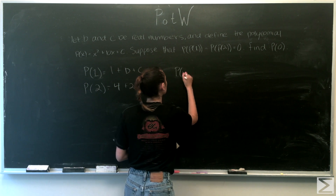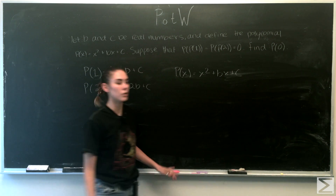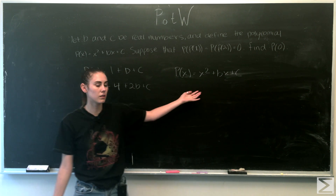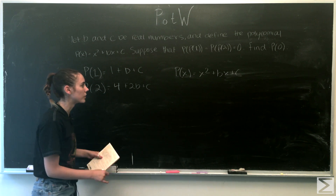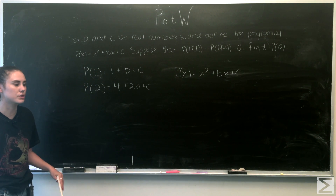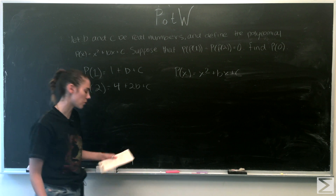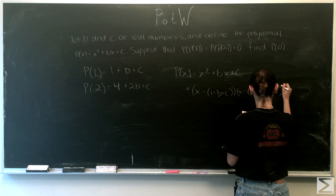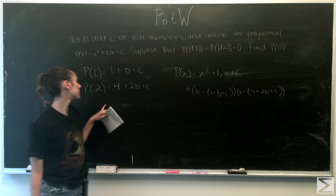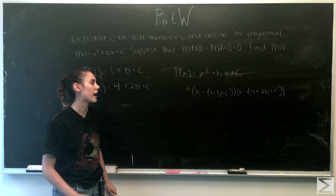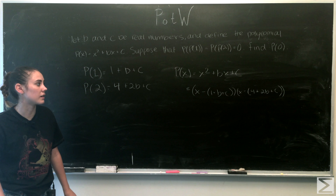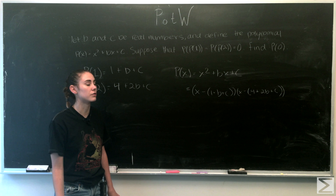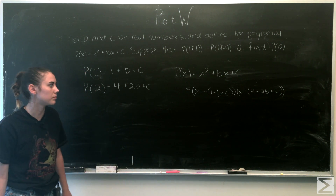We know p(x) = x² + bx + c. Since p(1) and p(2) are the roots, we can factor the polynomial. Using those roots, p(x) = (x − (1 + b + c))(x − (4 + 2b + c)).